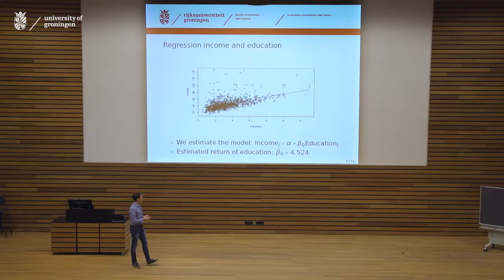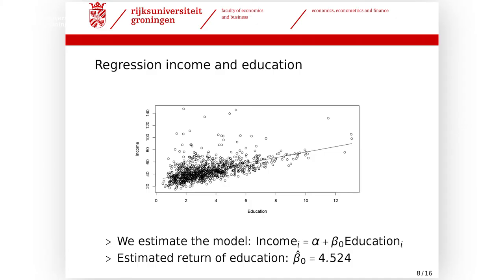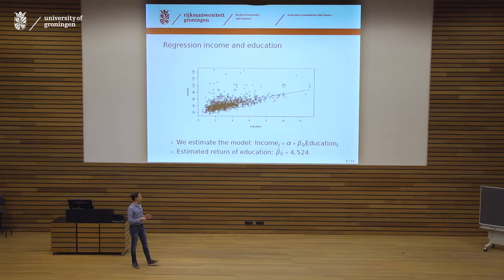Of course this is not a perfect model — there should be an error term. The model represents a line with a specific parameter. The question is: how do we find the slope of this line? Beta-zero is something we cannot know, so we come up with an estimate, which we call beta-hat-zero to indicate it is estimated rather than the true value. We arrived at a value of 4.5. The question is: how did we find this?